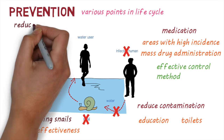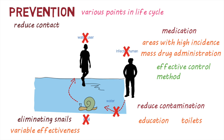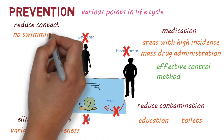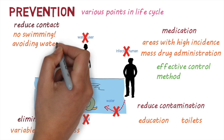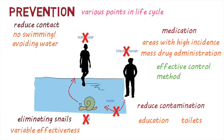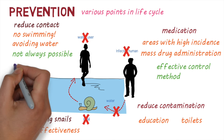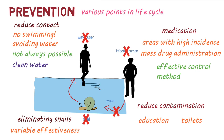Another way to prevent transmission is by reducing contact with contaminated water. Tourists can be advised not to swim or wade in areas known to have schistosomiasis. However, avoiding water can be hard for people who live near water and depend on it for their livelihood or basic functions. Providing clean water sources for drinking, cooking, or washing clothes can reduce contact with contaminated water.